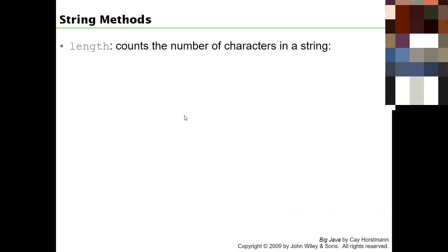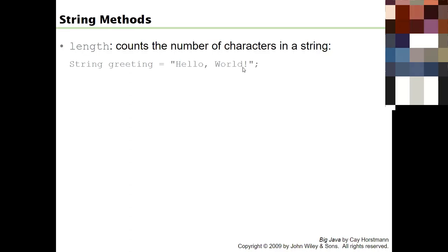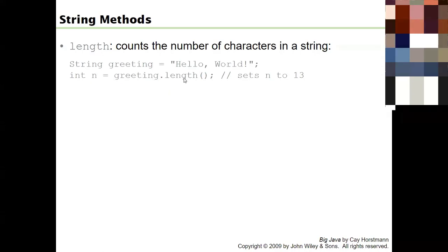The length method counts the number of characters in the string - if there are no characters the length is zero. For example, if greeting is 'Harry Hacker,' counting the characters including the space gives 13. You write greeting.length() using dot notation: here's my object, dot, here's the method. It returns a number which you store in variable n so you can use it in calculations later.